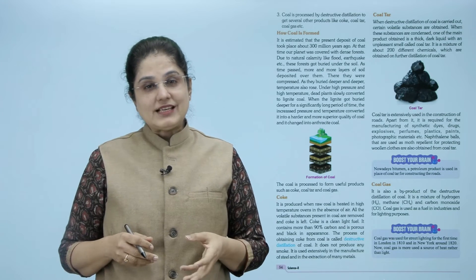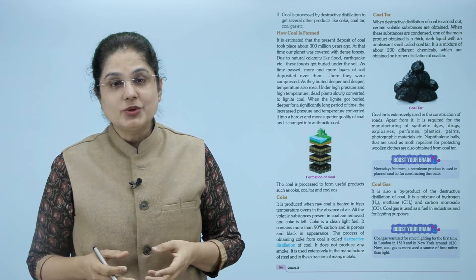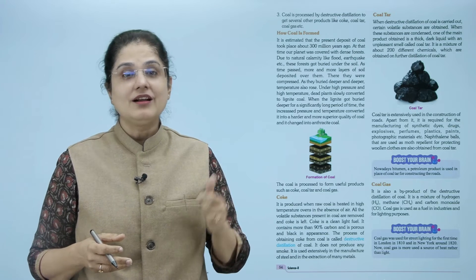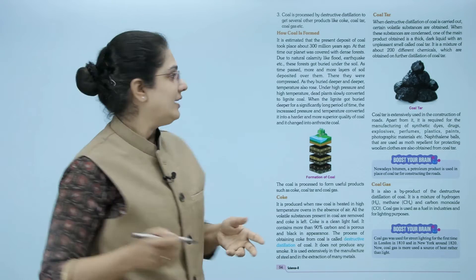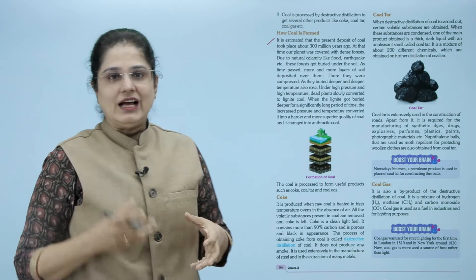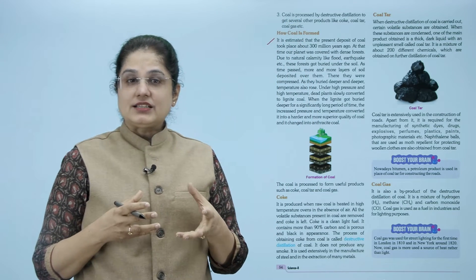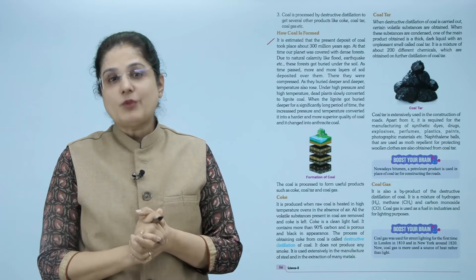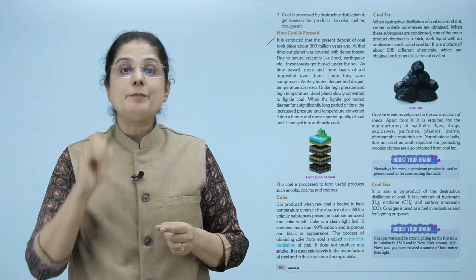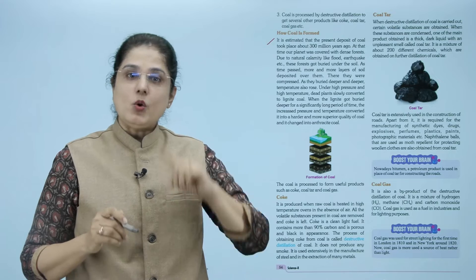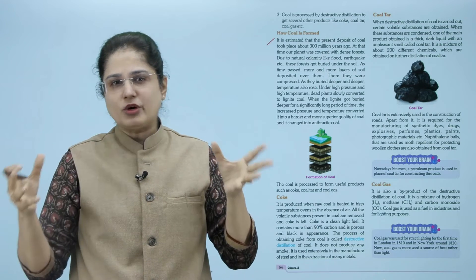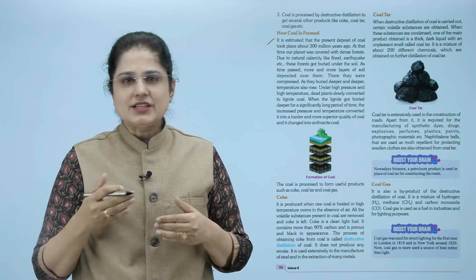Coal is processed by destructive distillation to get several other products like coke, coal tar, coal gas, etc. As for how coal is formed - estimate लगाया जाता है कि जो आजकल के coal के deposits हैं उनको बनने में 300 million साल लगे। उस time पे हमारे planet पर बहुत ज़्यादा forests थे।